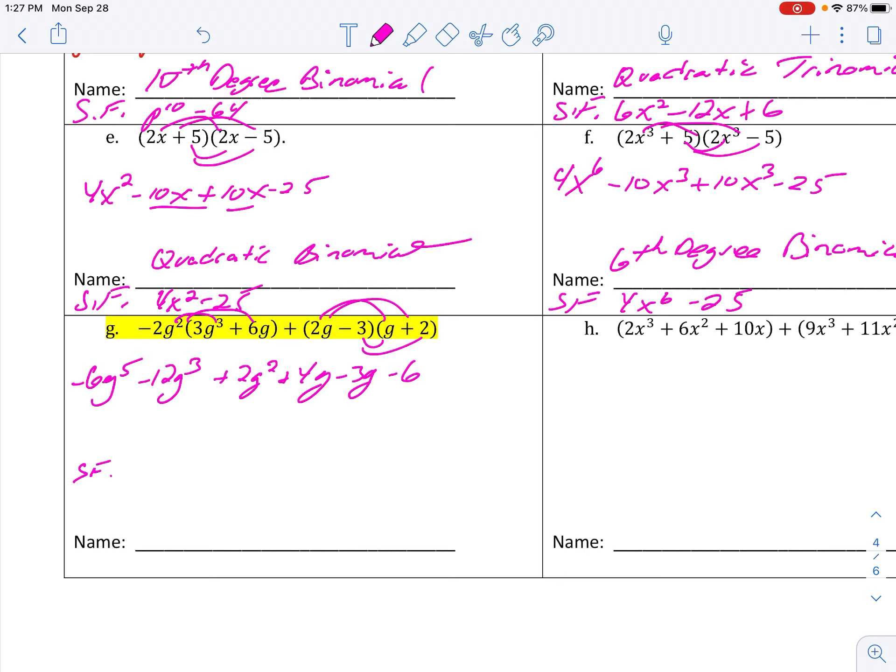And once those parentheses are gone, let's put it into standard form. Largest exponent is 6g to the fifth. Negative 6g to the fifth. So that's not going to go anywhere. Then I have a cubic. Then I have a quadratic. Looks like I have two linears that combine together to give me just 1g. And then minus 6. So then we put it together for our standard form and name it. But this is a fifth degree or sometimes called a quintic. How many terms? Five terms. So fifth degree, five term, polynomial.